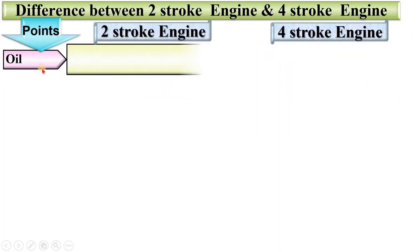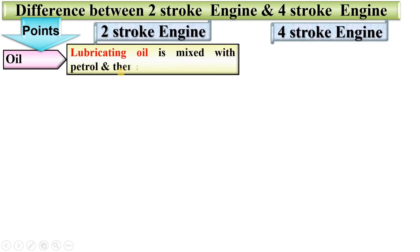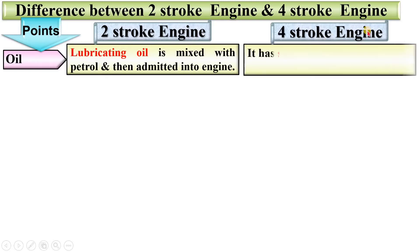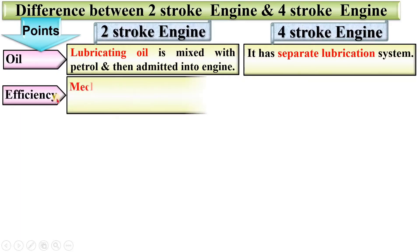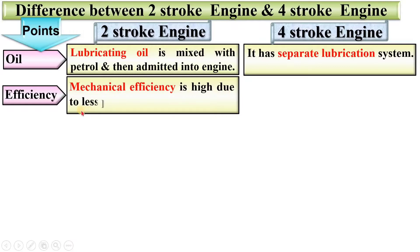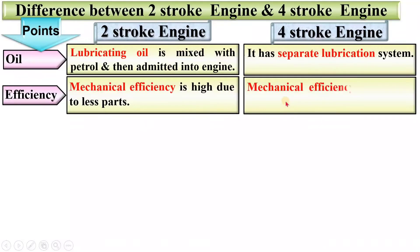Next point, oil. In a two-stroke engine, lubricating oil is mixed with the petrol and then admitted into the engine. Whereas, in case of a four-stroke engine, it has a separate lubrication system. Regarding mechanical efficiency, it is high in a two-stroke engine due to fewer parts. Whereas, mechanical efficiency is low in a four-stroke engine due to more parts.